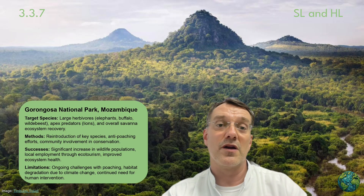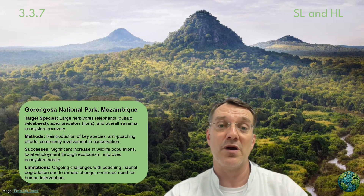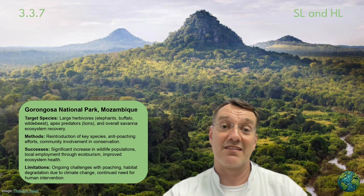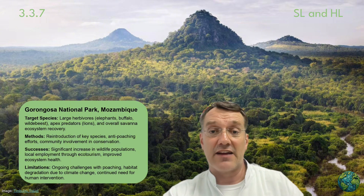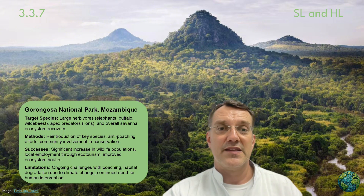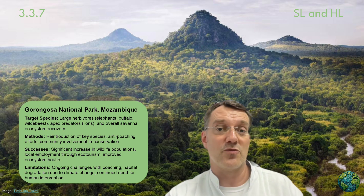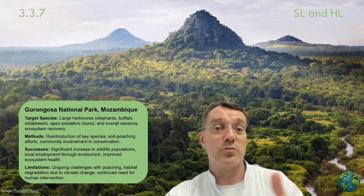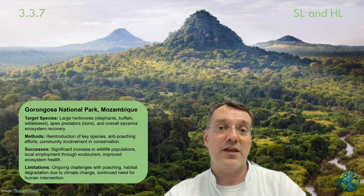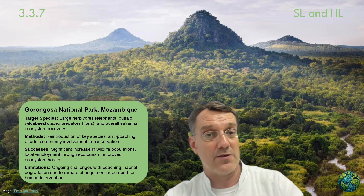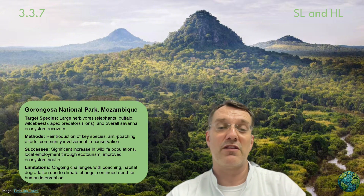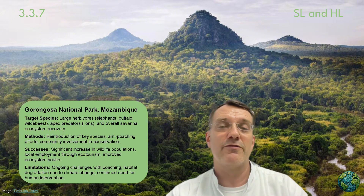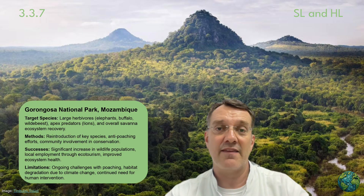Gorongosa National Park in Mozambique targets large herbivores like elephants and buffalo, apex predators like lions, and overall savanna ecosystem recovery. Methods include the reintroduction of key species, anti-poaching efforts, and community involvement in conservation. Successes include significant increases in wildlife populations, local employment through ecotourism, and improved ecosystem health. Limitations include ongoing poaching challenges, habitat degradation due to climate change, and a continued need for human intervention to maintain progress.